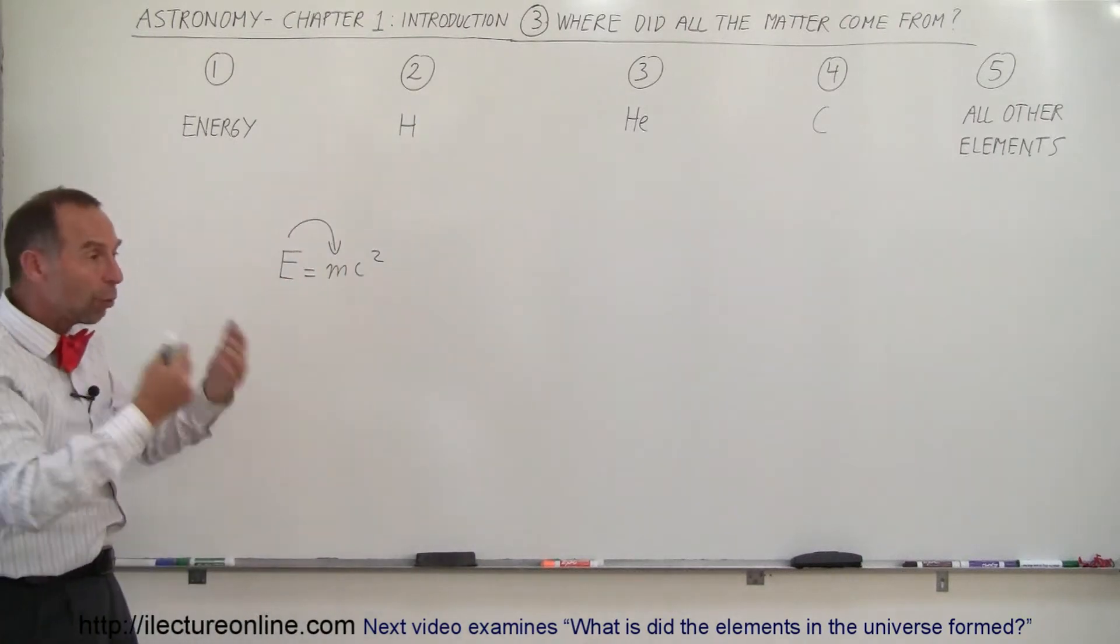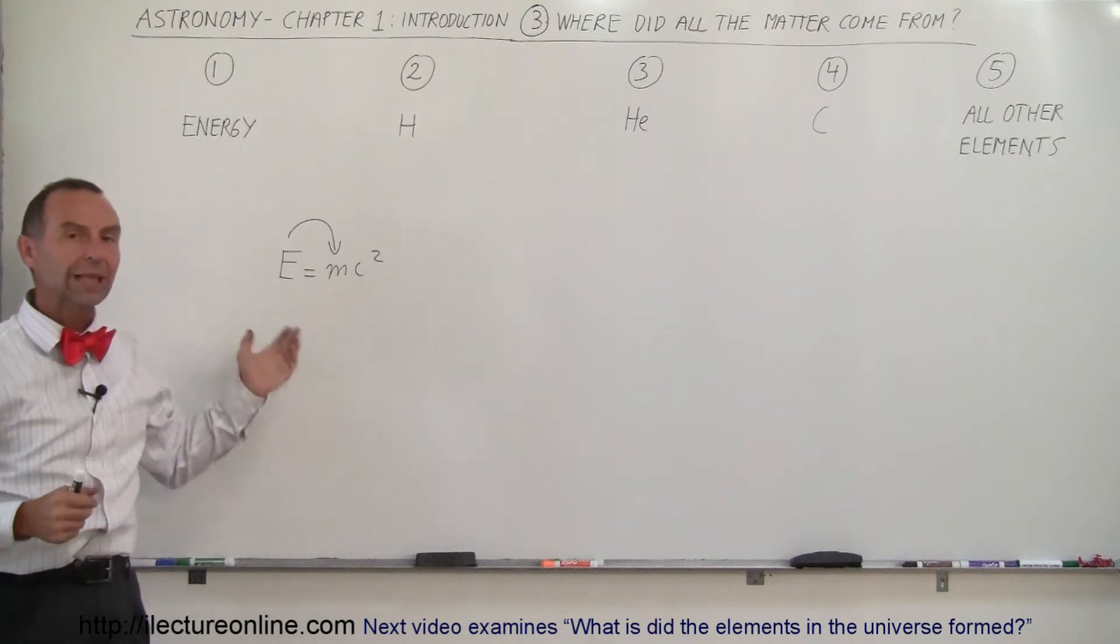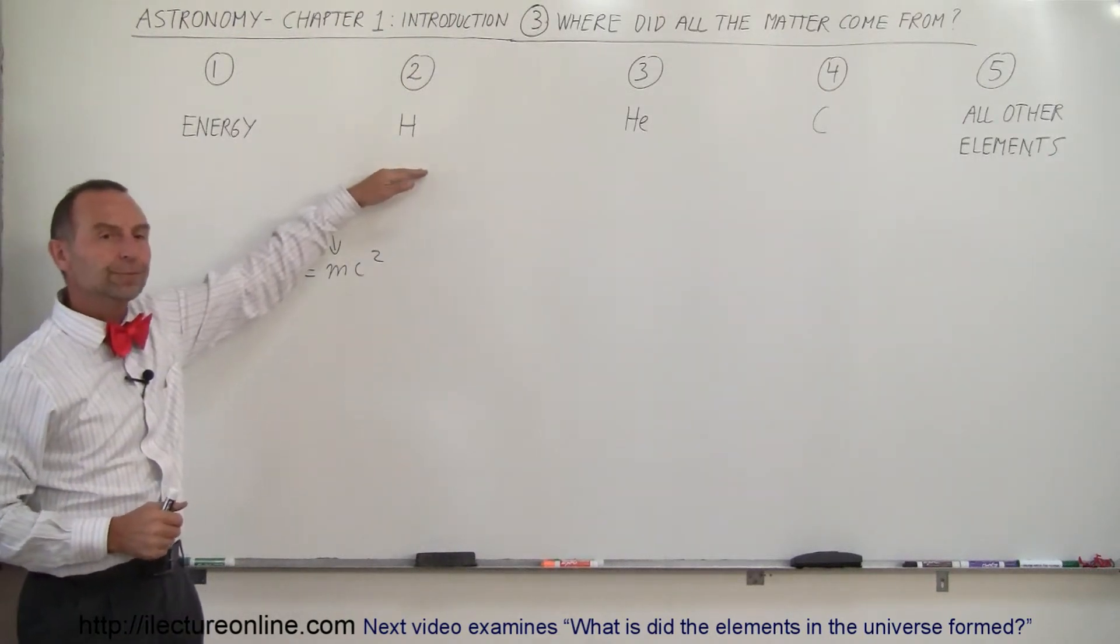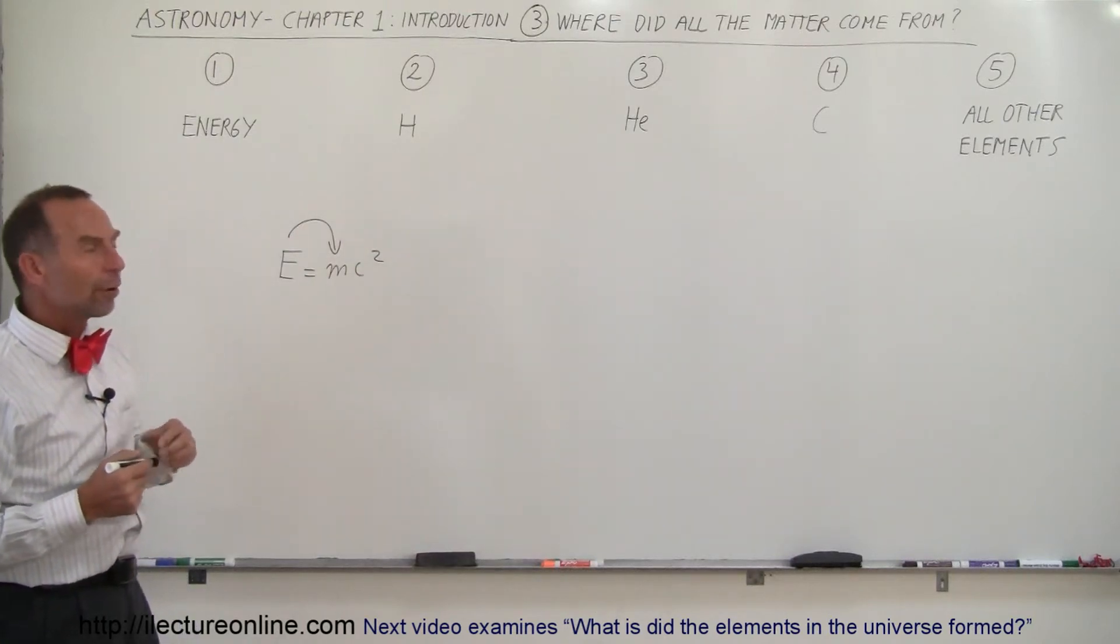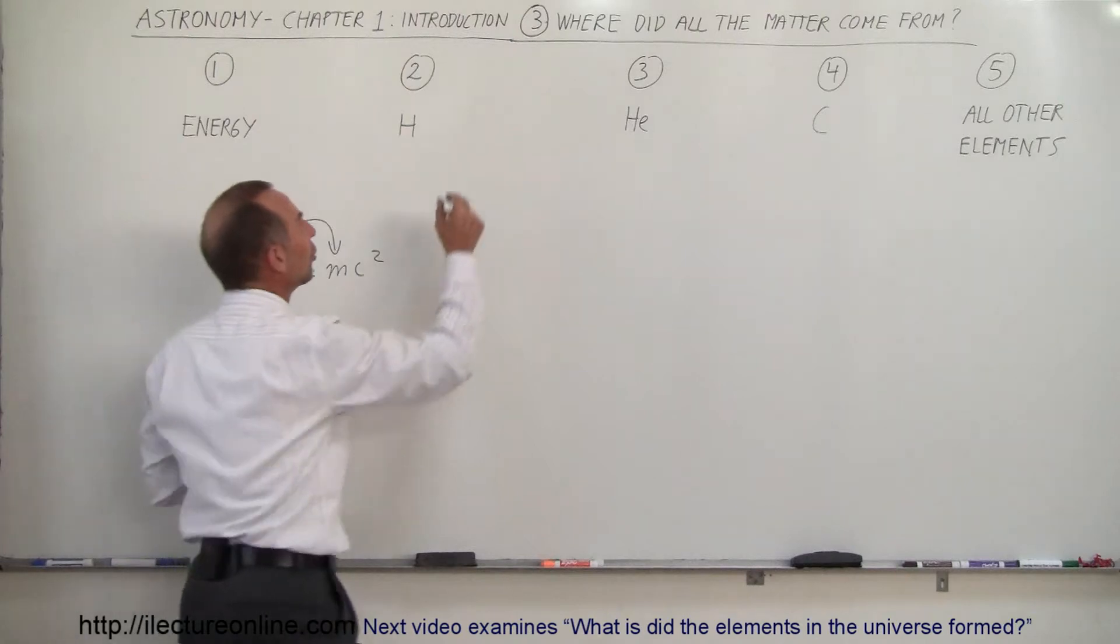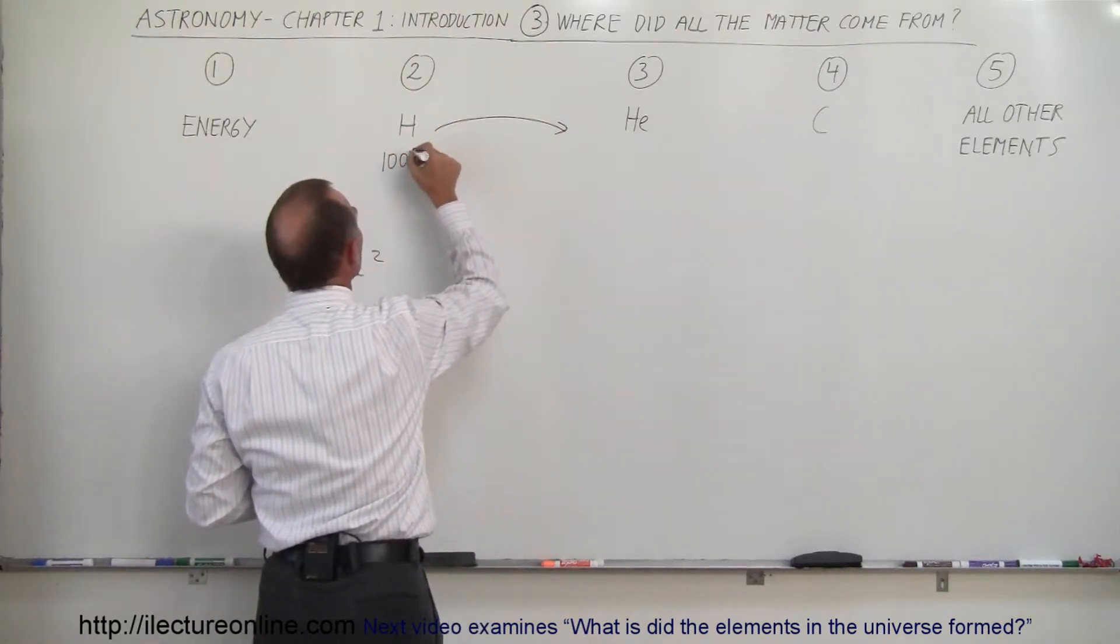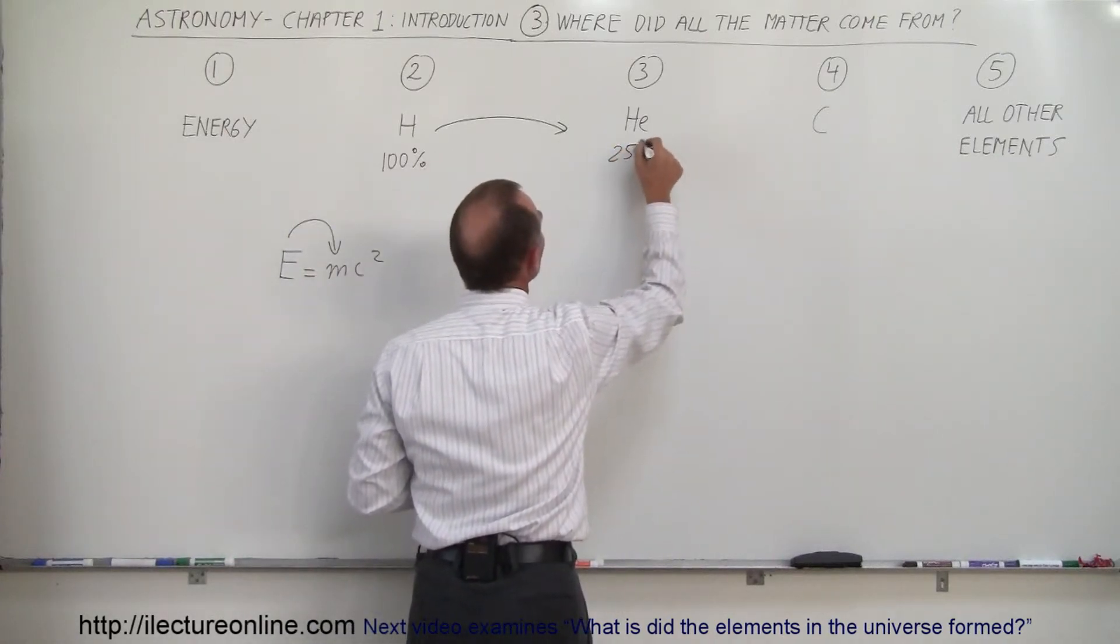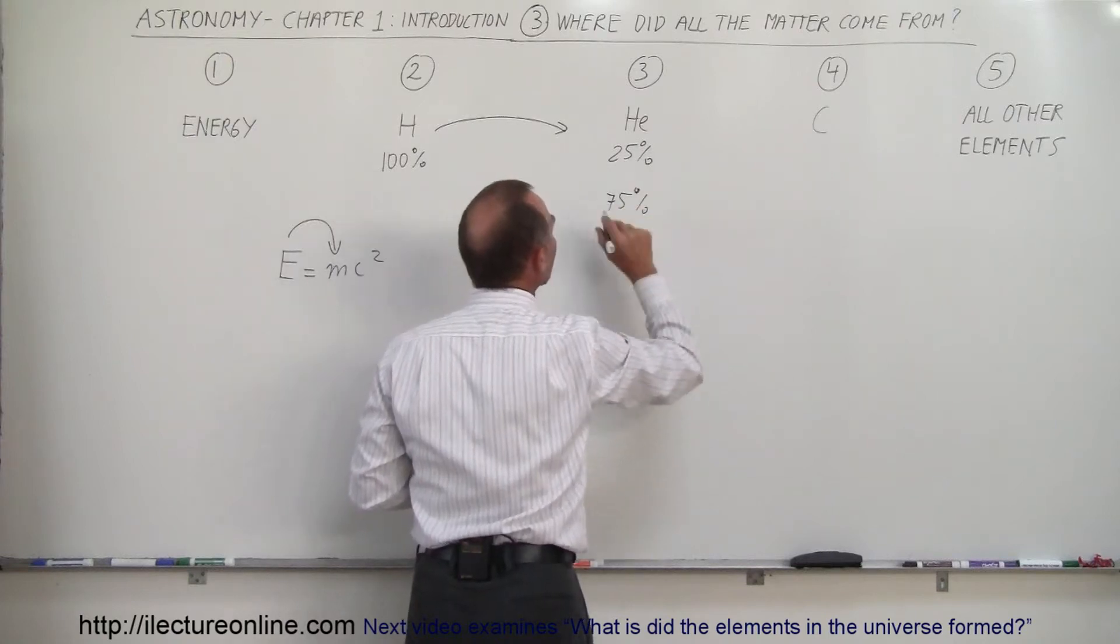So when matter began to be formed out of the energy with this relationship between energy and matter, most of the matter was hydrogen. But then something happened at the beginning universe where about a quarter of all the hydrogen turned into helium. So we started out with 100% of the matter being hydrogen to 25% becoming helium and 75% of it remaining as hydrogen.